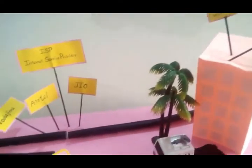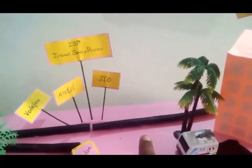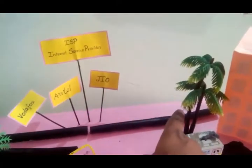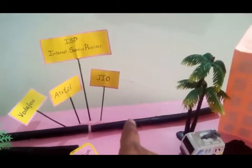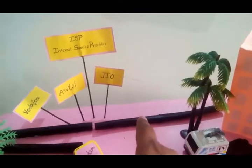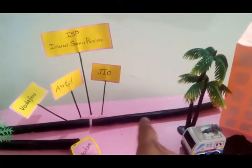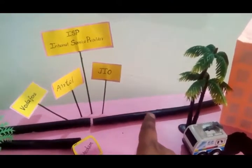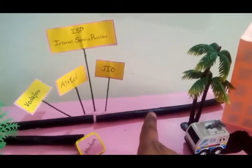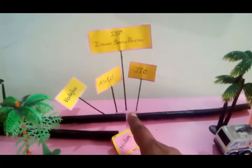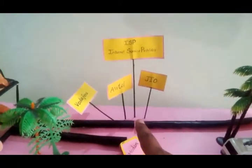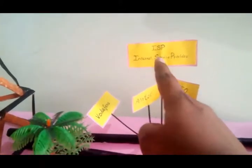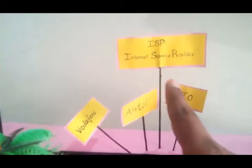Let's see how the information is transferring from the data center to our mobile. If we give any request, from the data center the data starts to flow through the optical fiber cable. We can say this optical fiber cable is the backbone of our internet. Through this optical fiber cable the information will reach our ISP, that means internet service provider — those who are providing the internet.